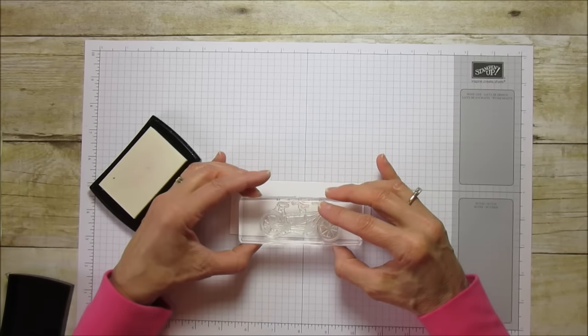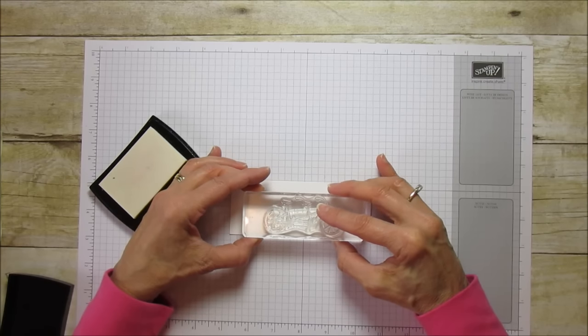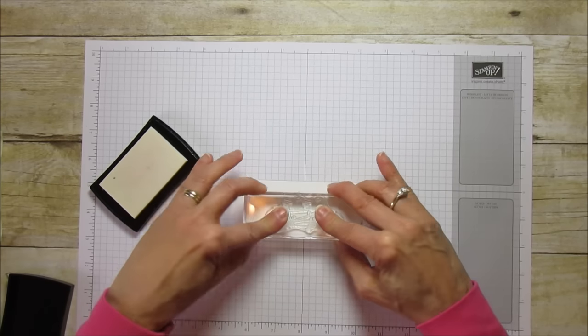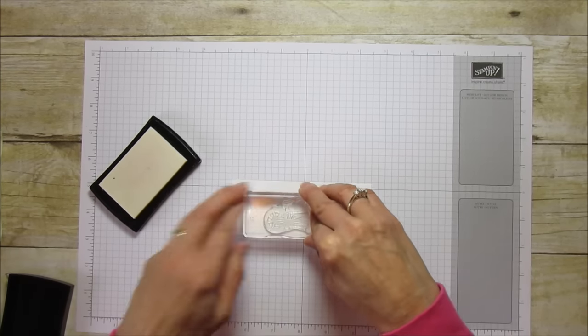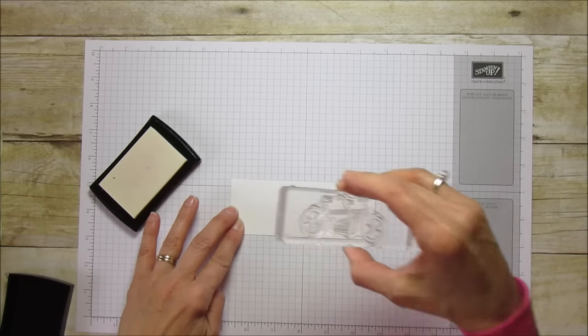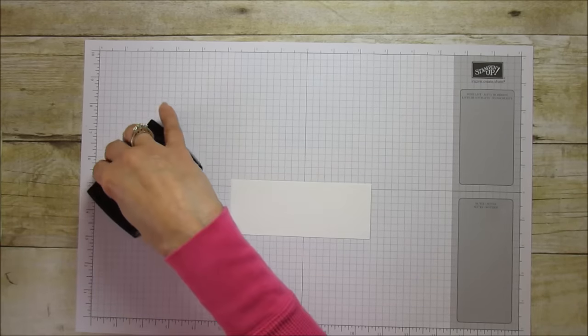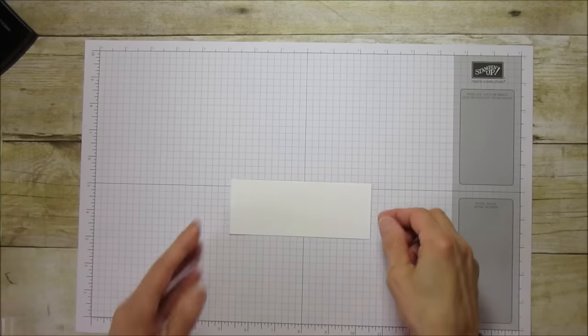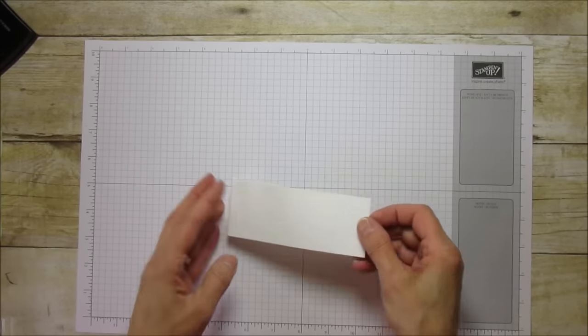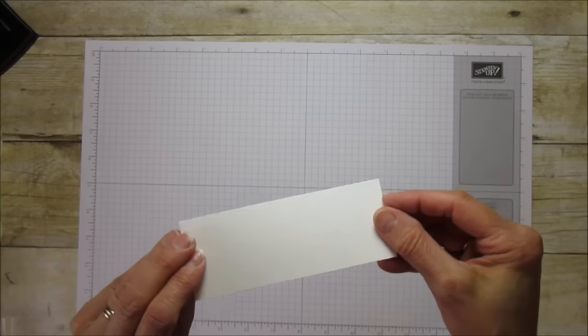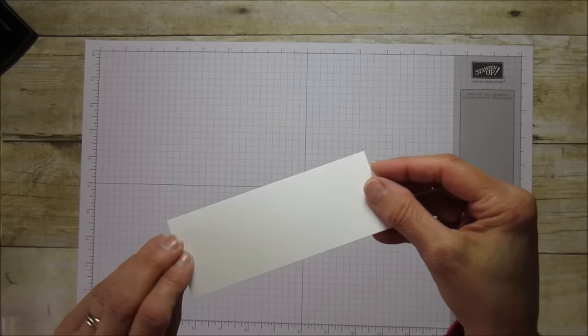We're going to stamp that right in the middle. Just stamp down and then up. It's kind of sticky so when you pull it off you'll hear a sticky sound. You can't really see it in the video but I can see it in the light. It has a little sheen to it.